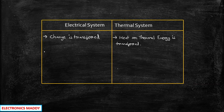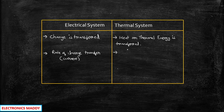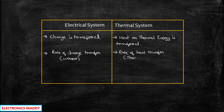In the electrical system, the rate of charge transfer is called current. Please make a note of these parallels, as this is very important to understand and will give you a complete picture when we arrive at the circuit diagram of the heating and cooling circuit of SCR. In the thermal system, the rate of heat transfer is called thermal power. So where we say current in electrical, we say thermal power in thermal.